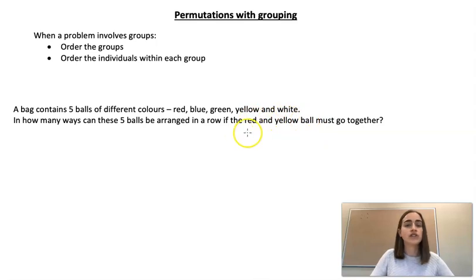So if we didn't have that restriction and we were just arranging them in a row, we've got five balls so we'd have 5! different ways that we could arrange them. But because of that restriction, our red and yellow, we have to first consider them as one item. So what we're going to do then first is if we consider them as one item, then we only have four things. So we're going to say we can arrange it in 4! different ways.